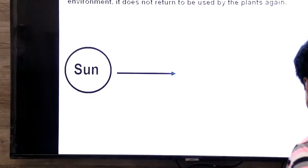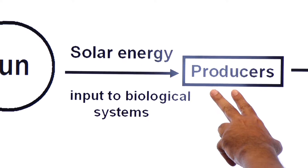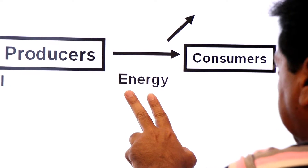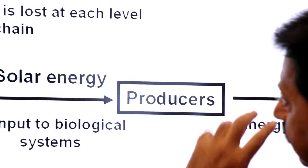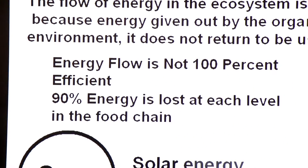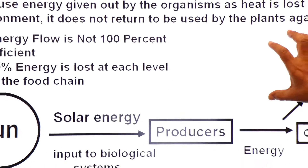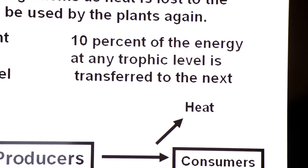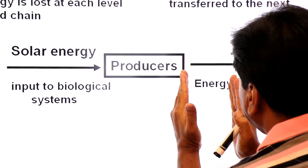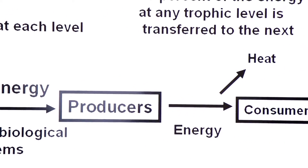The sun is a continuous source of energy — there is a continuous input to the biological system. Producers capture sunlight and convert it into chemical energy, and from producers the energy is transferred to consumers, but not 100%; some energy is lost in the form of heat. According to the second law of thermodynamics, energy flow is not 100% efficient — 90% of energy is lost at each level in the food chain, and only 10% of the energy at any trophic level is transferred to the next level.